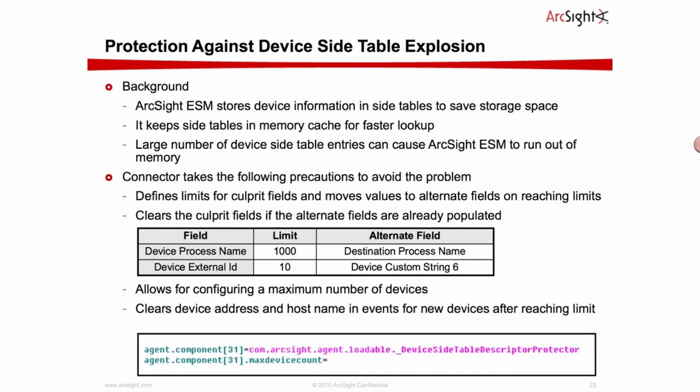There is an additional level of protection that is really only relevant to ArcSight ESM customers using the Oracle database backend. This is where we have a device side table — a side table within the schema to allow us to look up data very quickly. We didn't want those side tables to expand too large, as that causes performance issues, so there are limits on the number of references and indexes within them. This is not relevant to ESM 6 or later versions — it's only specific to ESM 5 on Oracle. Most customers are not going to worry about this, but there is additional side table protection built into the connectors.